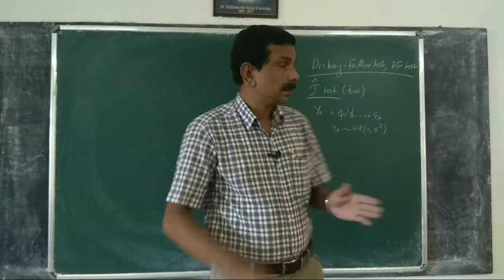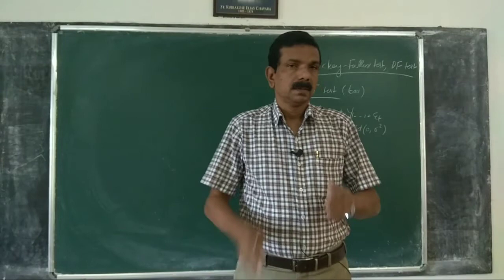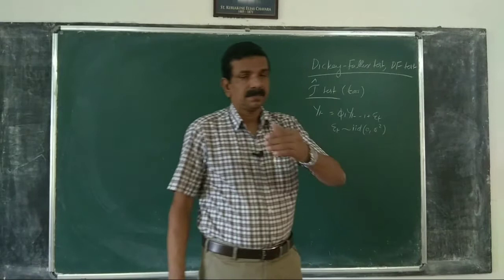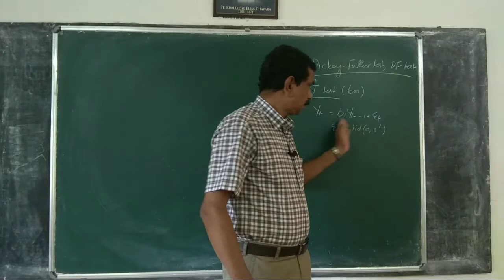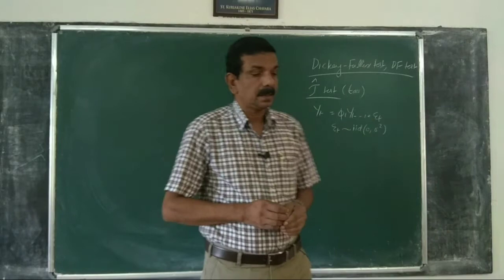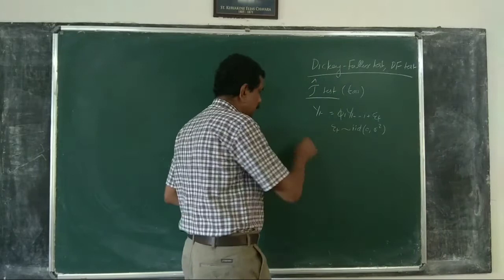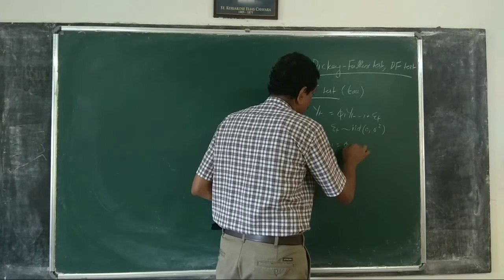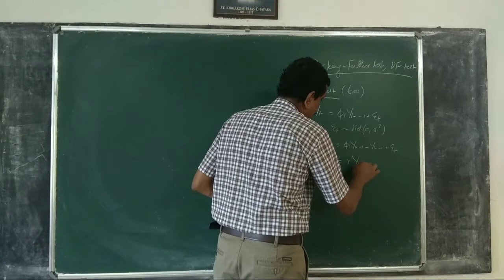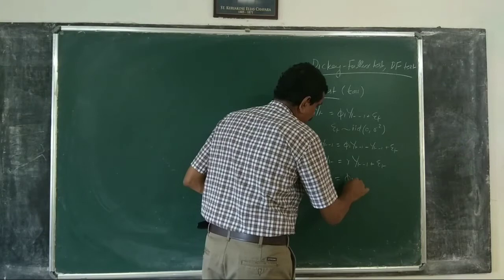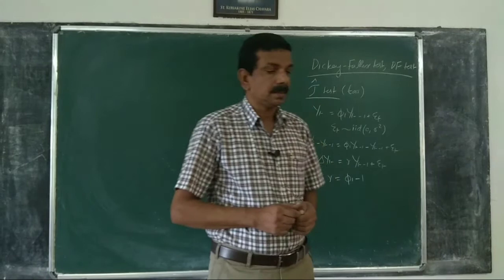To understand this test, consider the equation of a pure random walk: Y_t = phi_1 * Y_{t-1} + epsilon_t, where epsilon_t is assumed to be IID with zero mean and variance sigma squared. Normality of epsilon_t is not required for the validity of the Dickey-Fuller test — unlike for t-tests, F-tests, or chi-square tests, where normality of the error term is required. The requirement here is only identically and independently distributed. We derive: delta Y_t = gamma * Y_{t-1} + epsilon_t, where gamma = phi_1 - 1.